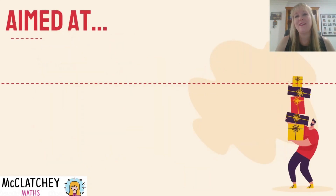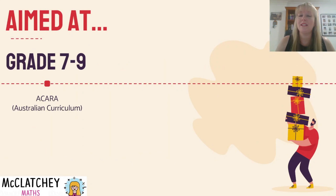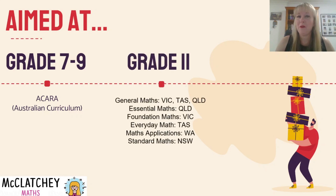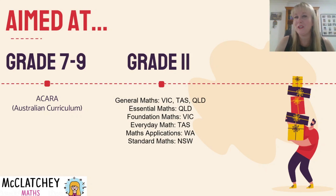This video series is aimed at students in grade 7 to 9. Best Buys is part of the Australian curriculum for all students in year 7 and 8 and then it's consolidated as part of a rates and ratios unit in grade 9. You'll also come across Best Buys if you are studying in grade 11 in a variety of maths right across Australia — general maths, essential maths, foundation maths — you can see it all on the screen.